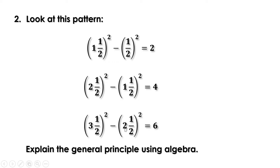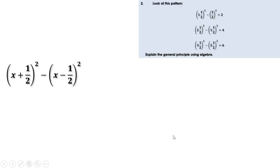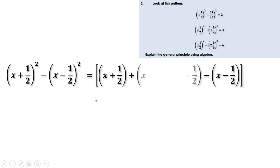So generally in the x-th line, this part will be half more than x and this will be half less than x. Half more than x is (x + ½) and half less than x is (x - ½). So in the x-th line we have to find (x + ½)² - (x - ½)². We know a² - b² = (a + b)(a - b). Therefore, (x + ½)² - (x - ½)² = (x + ½ + x - ½)(x + ½ - (x - ½)).